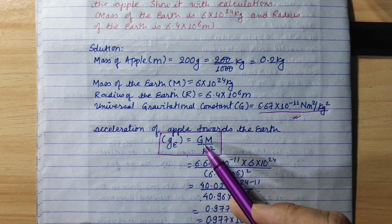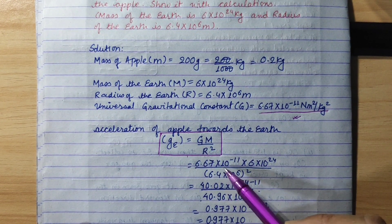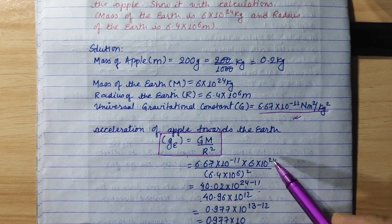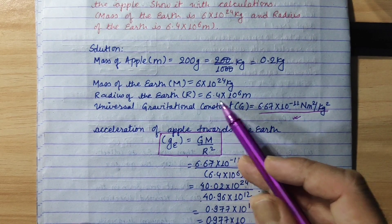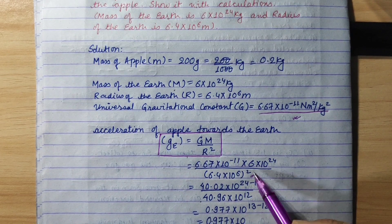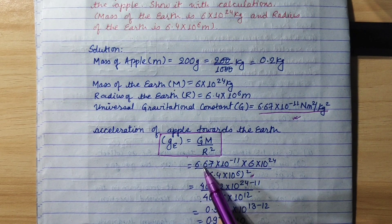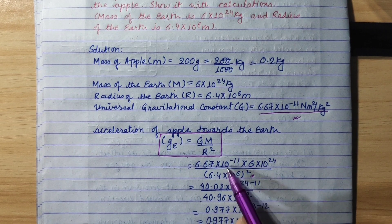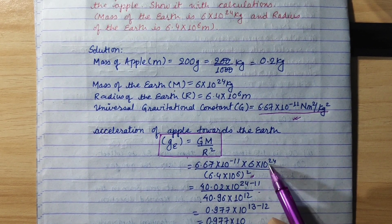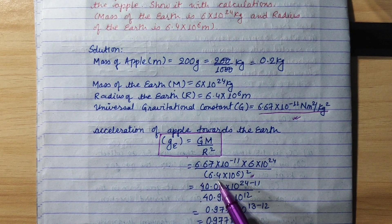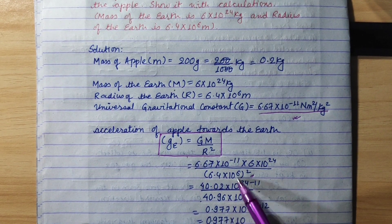Now, replacing values: G is 6.67 × 10⁻¹¹, mass of the Earth is 6 × 10²⁴, and radius is 6.4 × 10⁶, whole squared. Simplifying: 6.67 × 6 = 40.02; indices give 10⁻¹¹ × 10²⁴ = 10¹³; and (6.4 × 10⁶)² = 40.96 × 10¹².